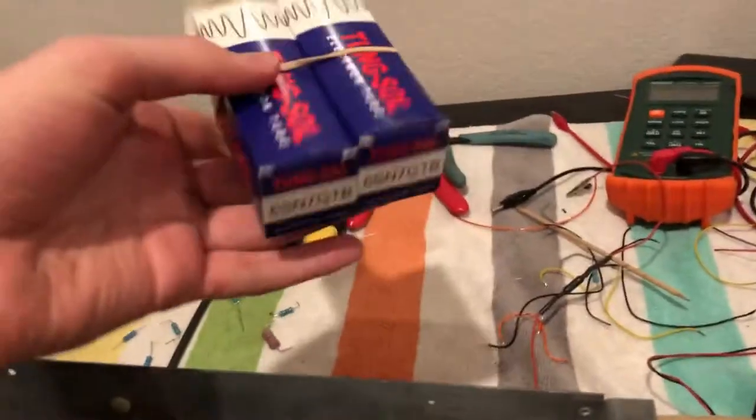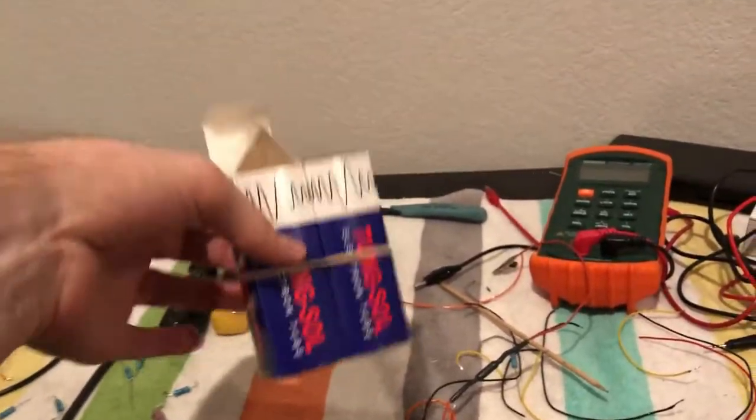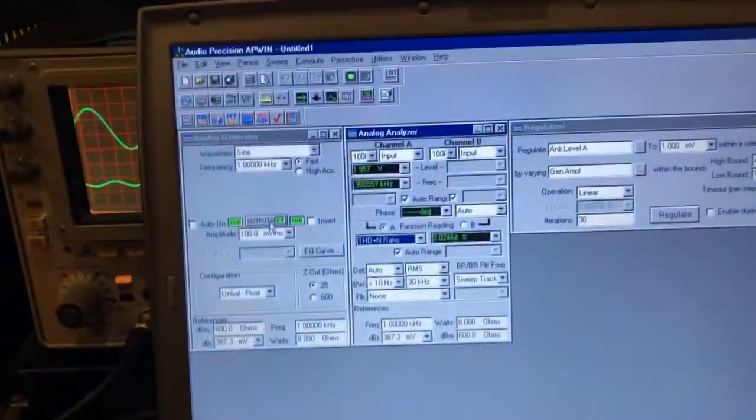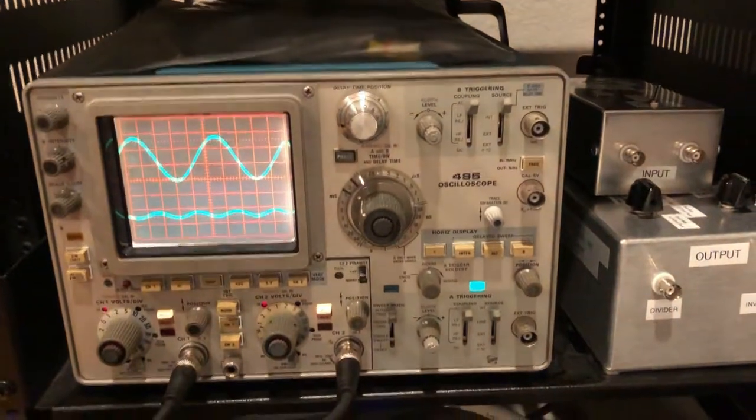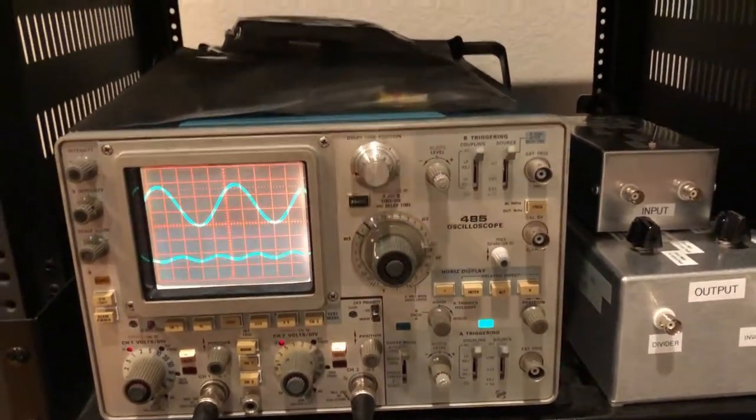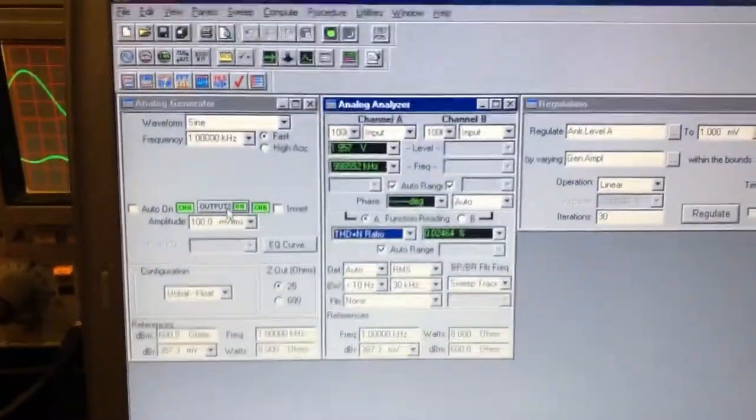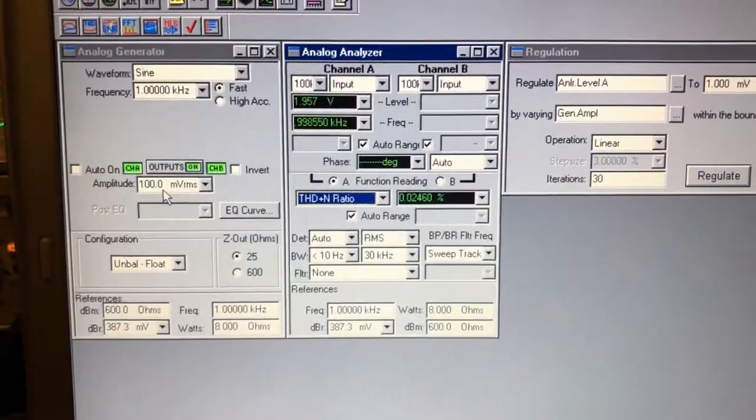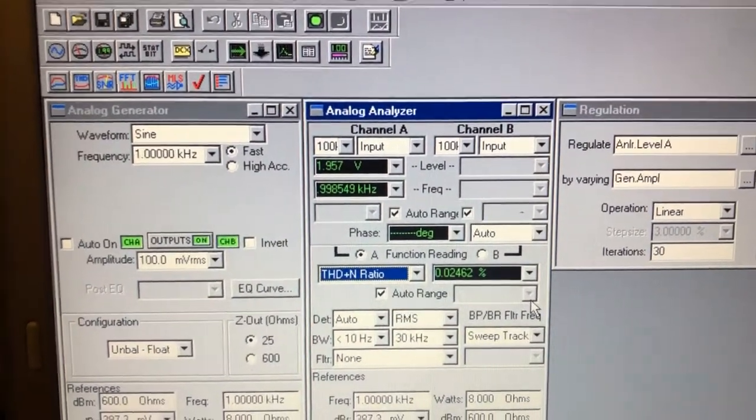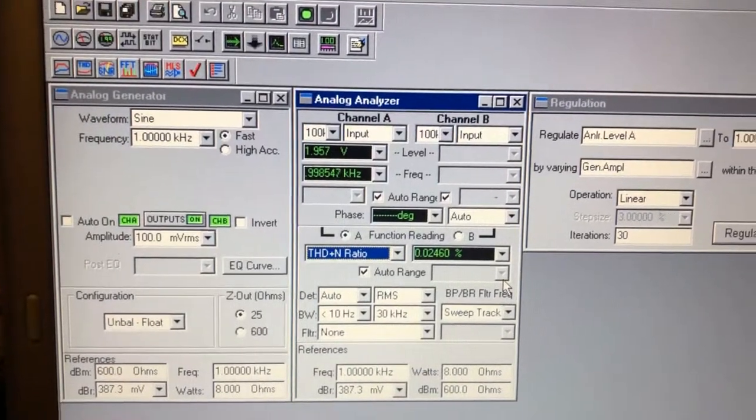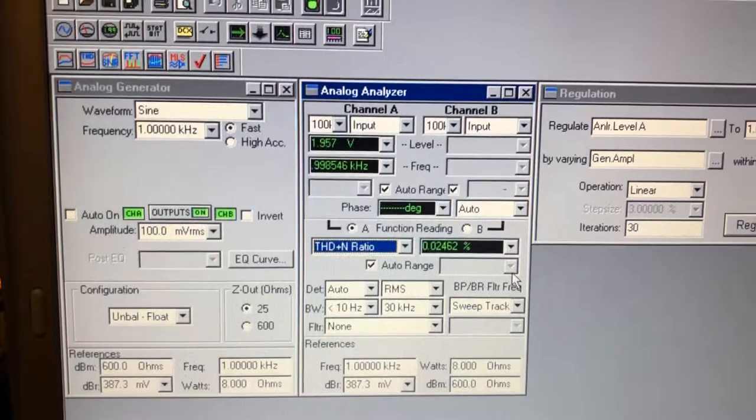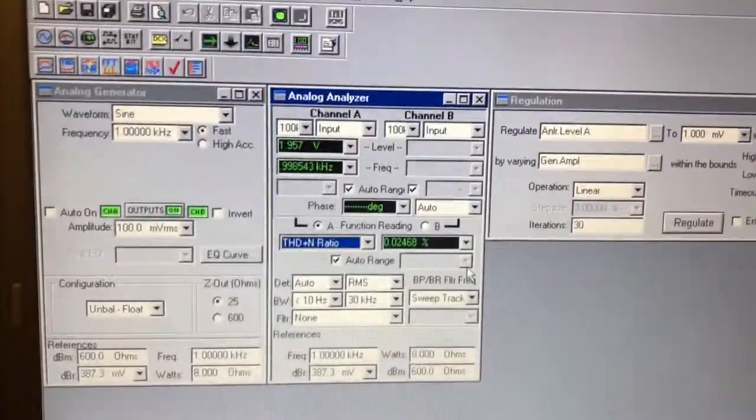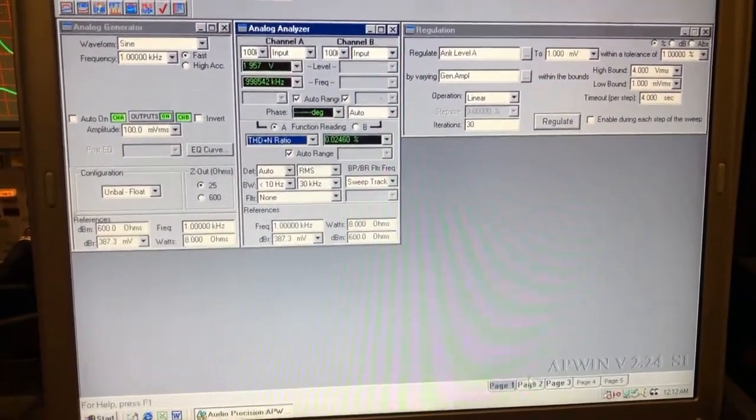I'll also say I'm running these Tung Sol 6SN7 tubes. These are new production tubes that do very well, and I've had great results with them. Anyway, here's the stage, it's up and running. I've got my audio precision and I've got my oscilloscope, my Tektronix 485 running behind there. On the audio precision, we can see the THD number 0.024% with 100 millivolts input, which is approximately 1.957 volts out. Remember we said the gain of this mu follower with a 6SN7 should be roughly 20. Here we're getting 19.5 with 0.1 volts to 1.957 volts. So we're really close to that mu approximation.